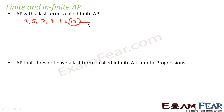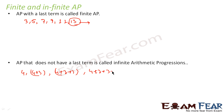An AP that does not have a last term is called an infinite AP. For example, take an AP where the first term is 4 and the common difference is 3. The next term will be 4 plus 3, then 4 plus 3 plus 3, then 4 plus 3 plus 3 plus 3 — I am just adding 3 to each previous term. This is an infinite AP; there is no end, so it has dots at the end.